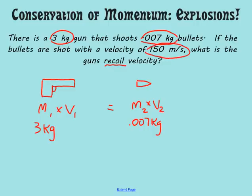It says if the bullets are shot with a velocity of 150 meters per second, so that's going to be V2. And we want to know what is the recoil velocity. So the recoil velocity is going to be the velocity backwards on the gun, and so we're going to leave that as V1.